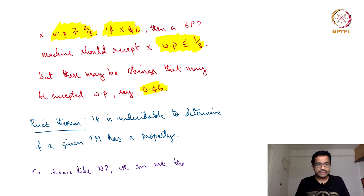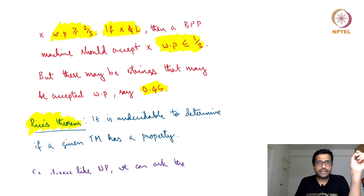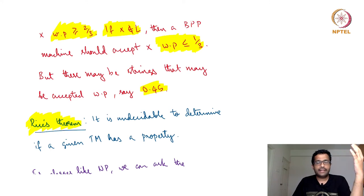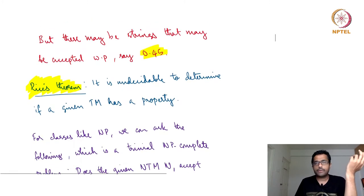The answer is that this particular problem is undecidable. You may recall from theory of computation Rice's theorem, which states that it is undecidable, given a Turing machine, to determine whether it has a certain property. In this case, the property we are asking is: is there some string that gets accepted with probability more than one-third but less than two-thirds? Rice's theorem was stated for deterministic Turing machines, but we can modify it accordingly to show that even this problem is undecidable.